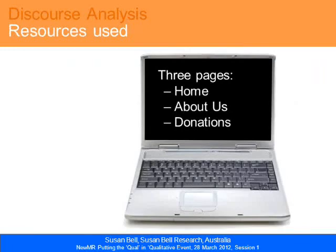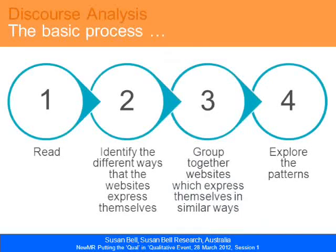We looked at the websites of all these charities, and they are many, many pages long. As is typical for any research project, we needed to curtail it and give it some shape — we simply chose three pages relevant to the brief: the home page, the About Us page, and the donations page. After selecting them, we read them — that was the first step — then identified the different ways the websites express themselves, grouped together those that express themselves similarly, and explored the patterns as to what it all meant.